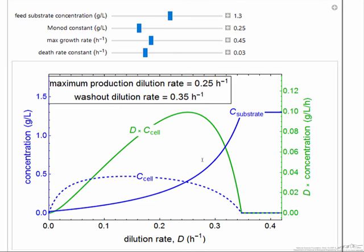The simulation indicates the point where if we have a high enough flow rate, we just wash everything out of the reactor.